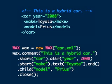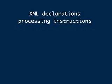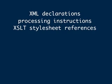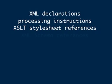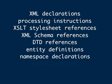Then we call close, which terminates all un-terminated elements and closes the destination file, writer, or stream, whichever you've used. There's much more that Wax can do. Beyond elements, attributes, text, and comments, it can write XML declarations, processing instructions, XSLT style sheet references, XML schema references, DTD references, entity definitions, namespace declarations, CDATA sections, and can indent elements.